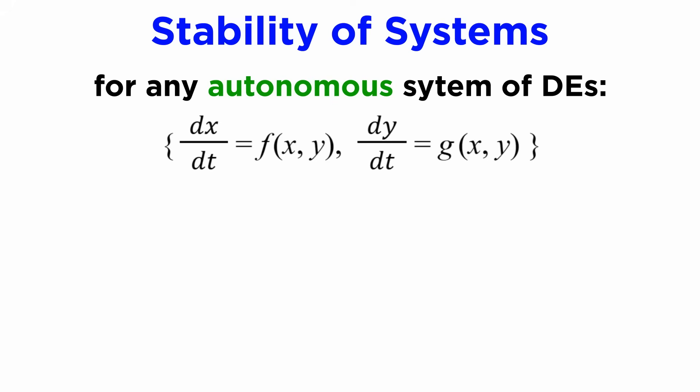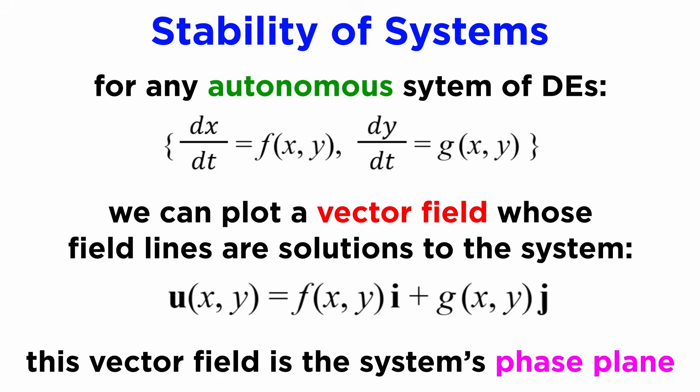Let's now study the concept of system stability. Similar to the concept of a tangent field for representing the trajectories of solutions to first-order differential equations that we learned in the numerical methods tutorial, systems of differential equations that are autonomous, meaning that they do not depend explicitly on t also have an equivalent notion, that of the phase plane.